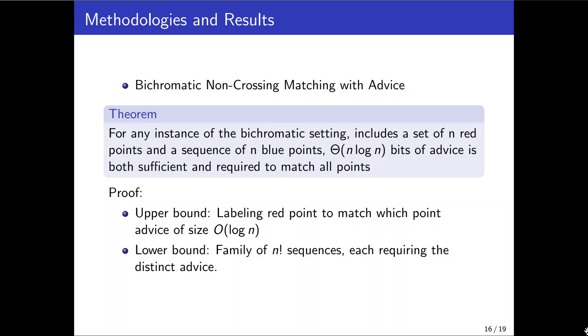We also provide a family of n factorial sequences which require a distinct advice for perfect matching. This results in a lower bound of big omega of log n factorial for the advice size.